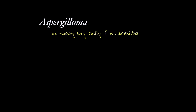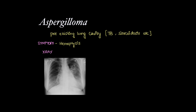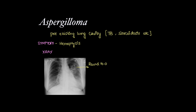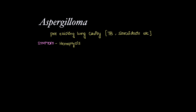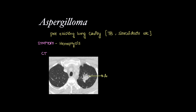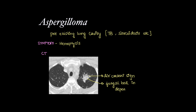Aspergilloma occurs in a pre-existing lung cavity formed due to TB or sarcoidosis. The symptom is hemoptysis. On X-ray, we can see a round to oval soft tissue with air crescent sign, classically known as the Monod sign. On CT, we can see the air crescent sign with a fungal ball that changes its position between supine and prone positions of the patient.